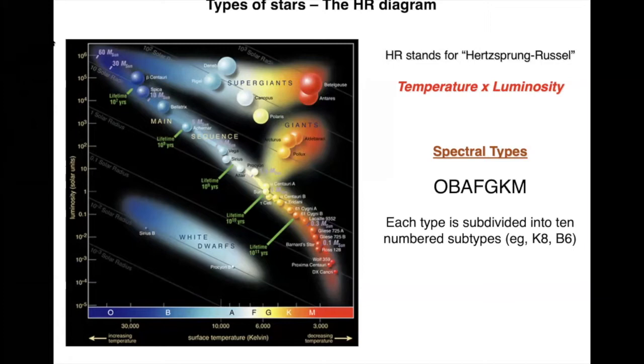When stellar spectra are first obtained and the spectral lines are seen, a classification scheme is devised. We use this scheme nowadays as you know, the spectro-types OBAFGKM.